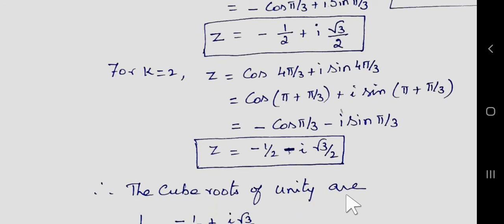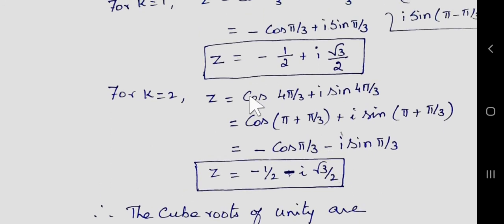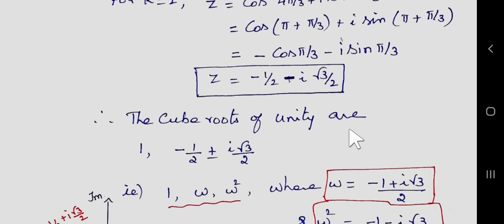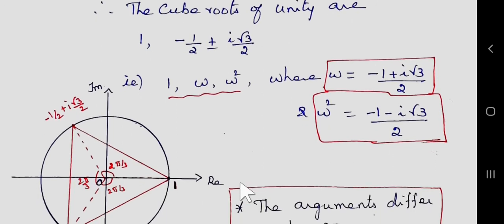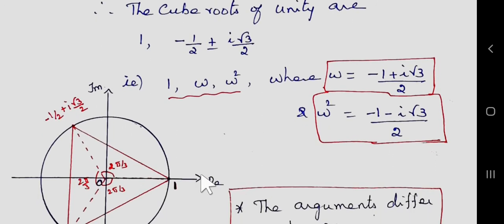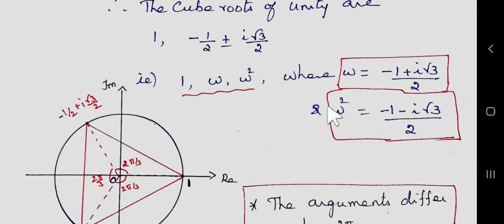These are the cube roots of unity: the first root is 1, the second root is −1/2 + i·(√3/2), and the third root is the conjugate of the second one, −1/2 − i·(√3/2). In cube roots of unity, −1/2 + i·(√3/2) is taken as omega (ω), and ω² is just the conjugate of that.